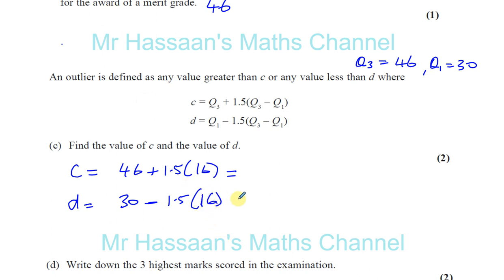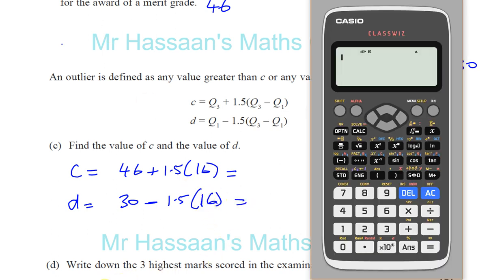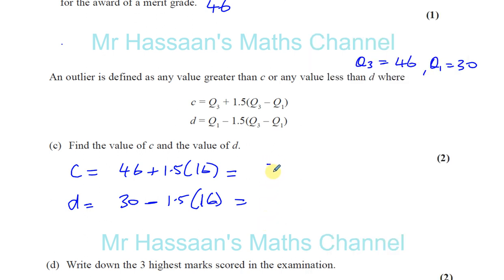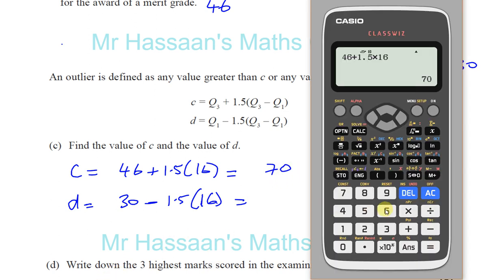And there we'll get our answers. We have 46 plus 1.5 multiplied by 16. That gives us 70 as the limit for the outliers in the upper part. And for the lower part, you've got 30 minus 1.5 times 16, which gives you 6. So 6 is the limit for the outliers on the lower side.